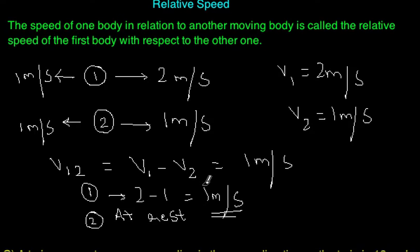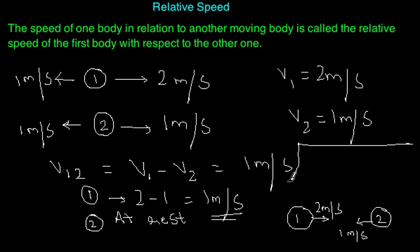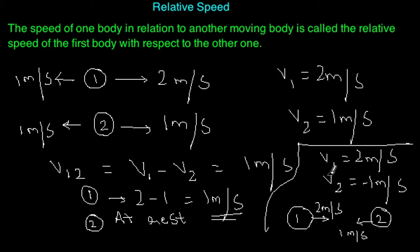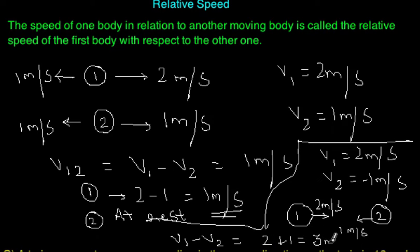Now, what happens if the objects are moving in opposite directions? Let object 1 move at 2 m/s and object 2 at 1 m/s in the opposite direction. We consider signs: v1 = 2 m/s, v2 = -1 m/s. So the relative speed v12 = v1 minus v2 = 2 minus (-1) = 3 meters per second. Remember: same direction means the relative speed is the difference of the two speeds; opposite directions means the relative speed is the sum of the two speeds.